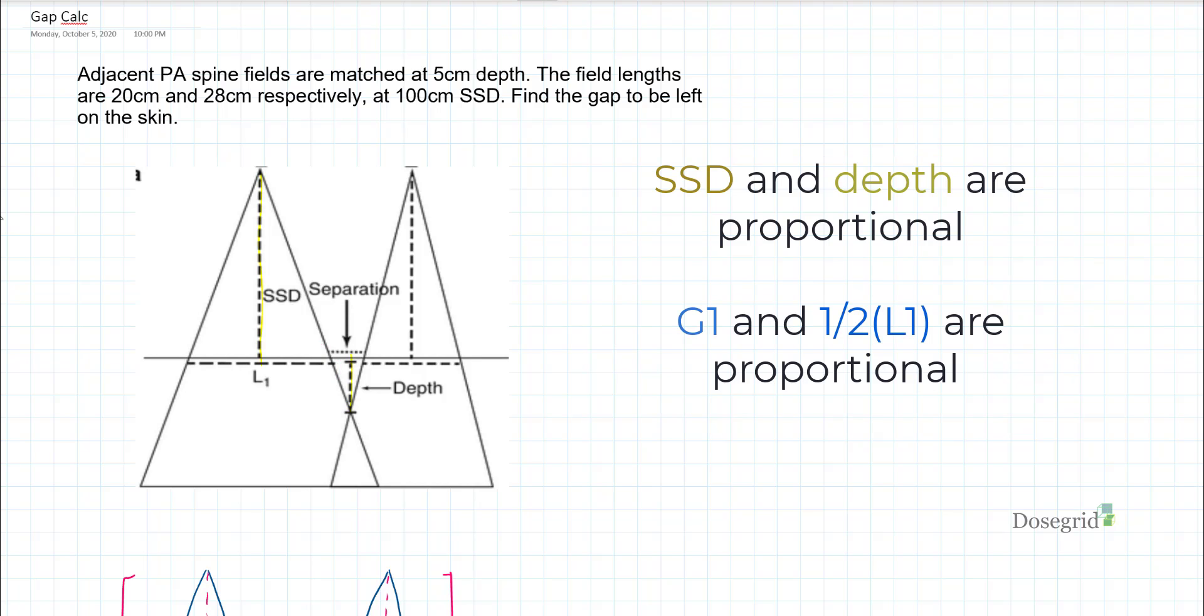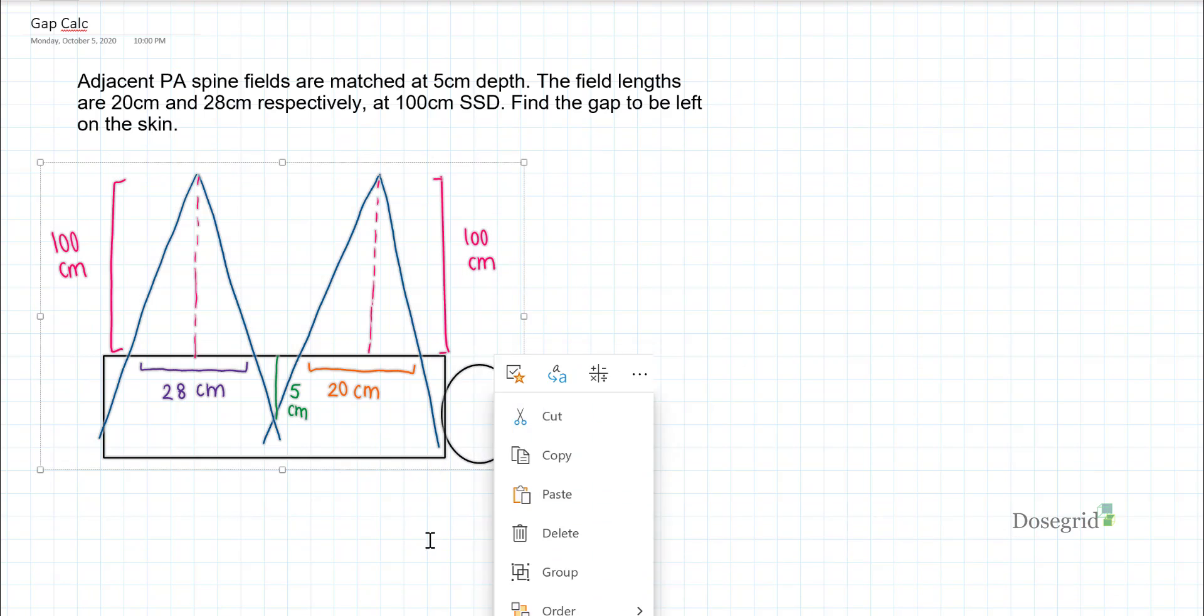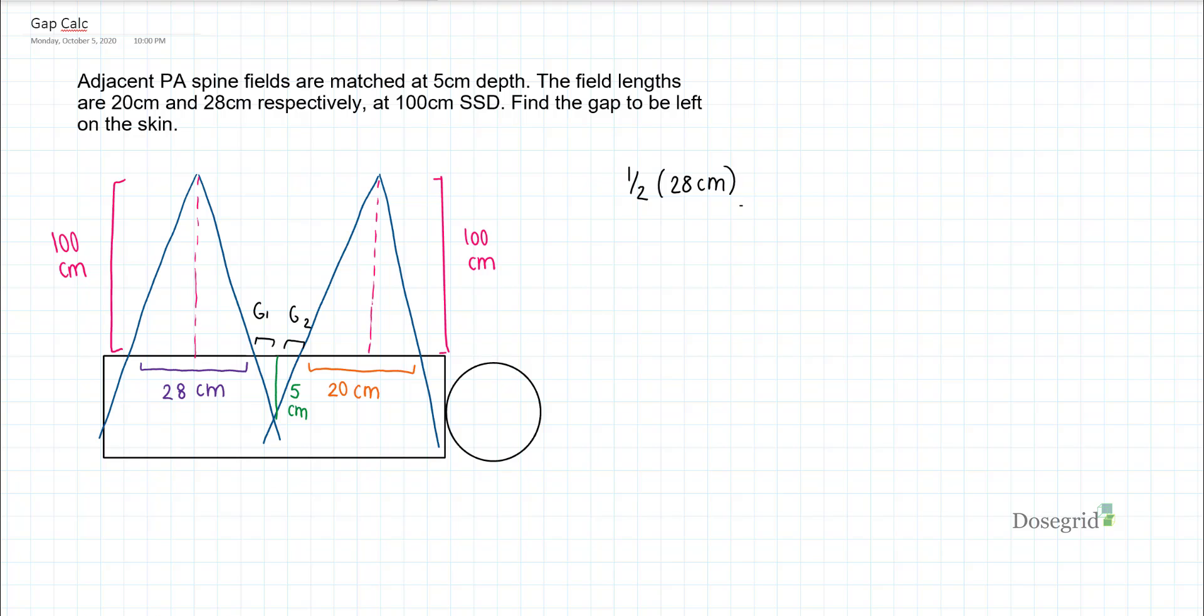SSD is similar to depth. Half of L is similar to G1. To find G1, we can set up a proportion. SSD corresponds to depth and one half of the length corresponds to G1. Solving it out, you get G1 equals 0.5 cm.